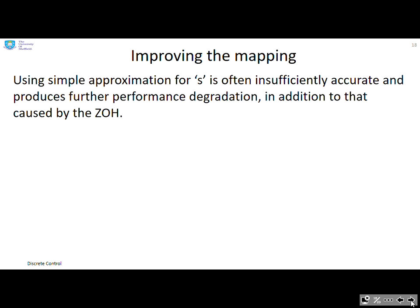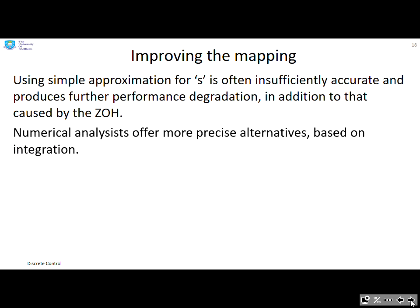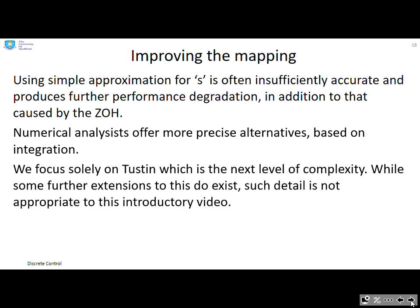So how might we improve the mapping? We've done a simple approximation for s so far, and this is not often accurate enough. And therefore it's going to produce further performance degradation in addition to what's caused by the zero-order hold. So numerical analysis offers us some more precise alternatives based on integration. Now we're only going to give one of those, the Tustin method, which is the next level of complexity, because if you want to do more and more, really that's not appropriate for an introductory video.